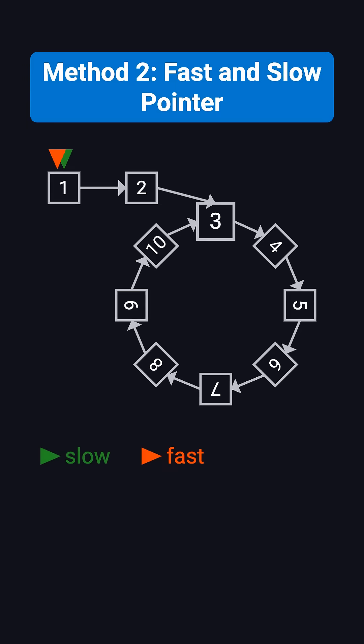It works in two steps. First, you use a slow pointer that moves one step at a time, and a fast pointer that moves two steps at a time, until they meet inside the cycle.